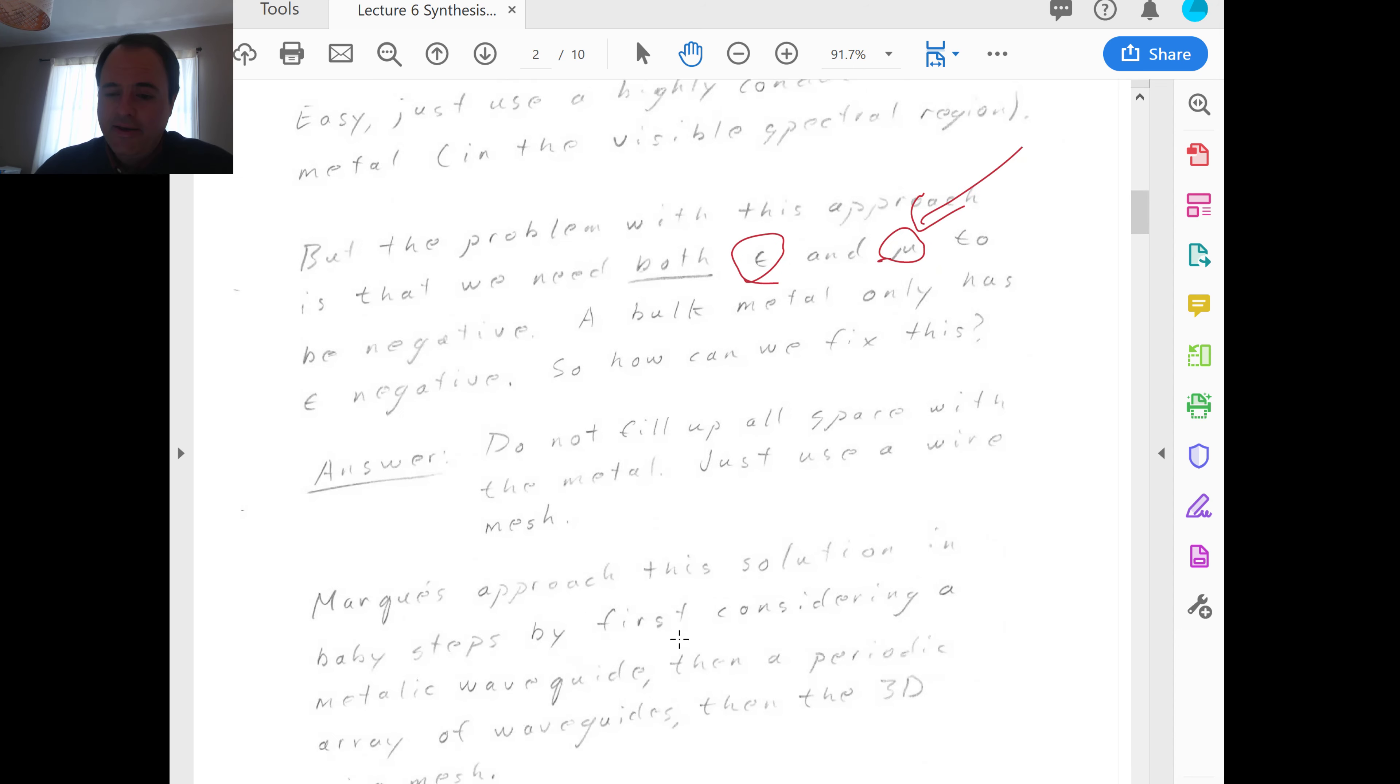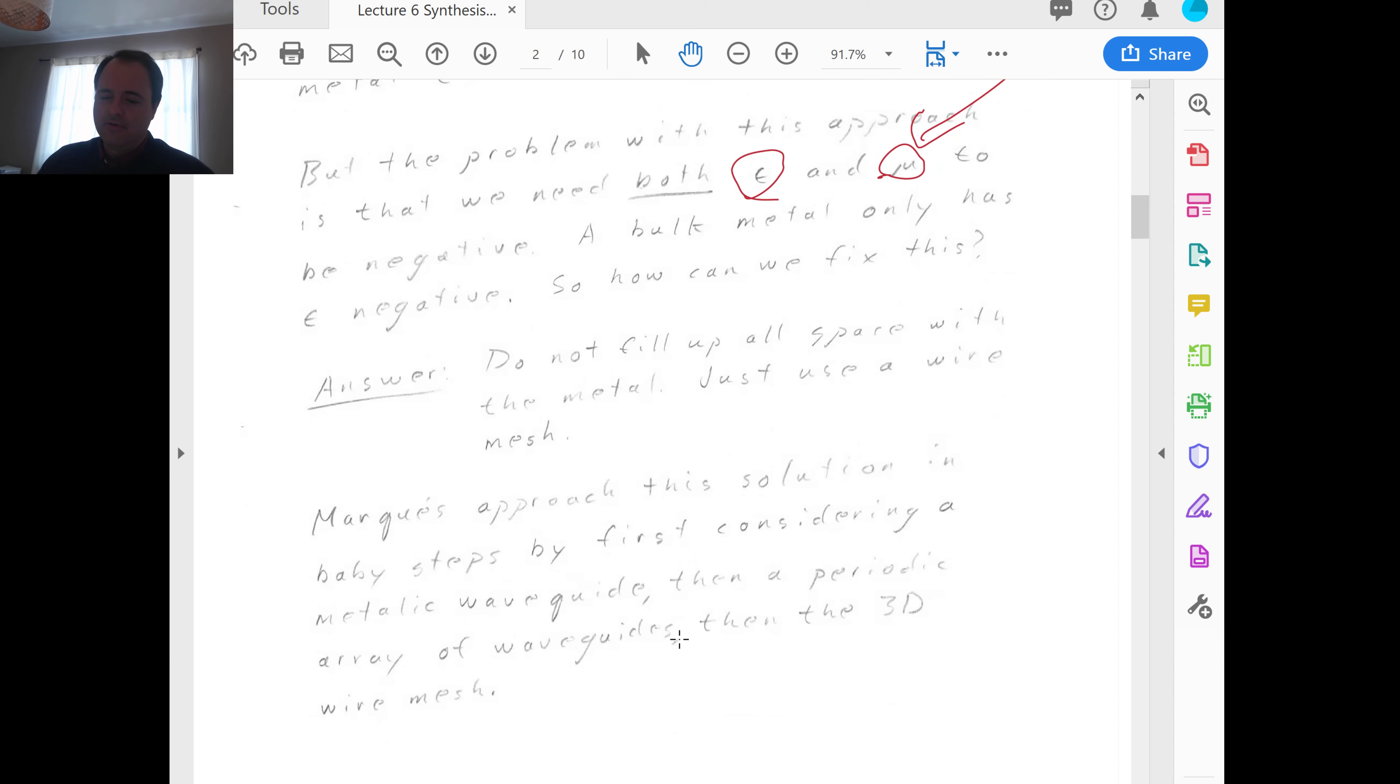However, we can take a look at the metals and get some inspiration about how to fix up this positive mu value, making it a negative value. But we have to take a few steps first. So a bulk metal only has epsilon as negative. So how do we fix this? Answer. Well, we do not fill up all space with the metals. Just use a wire mesh. So we'll work up to why this answer, why this is an answer to this problem. So if we don't use up all the space, then there's space available for us to put in features that imbue the material with a negative mu.